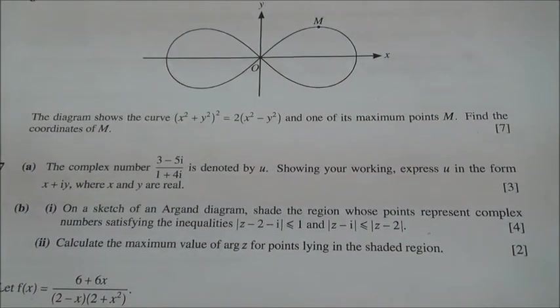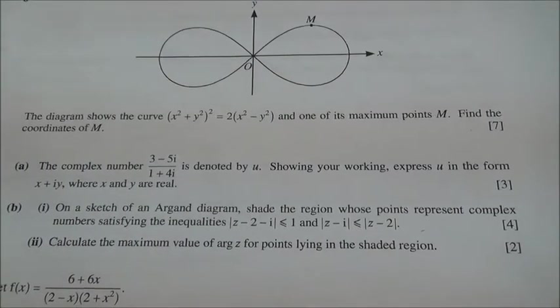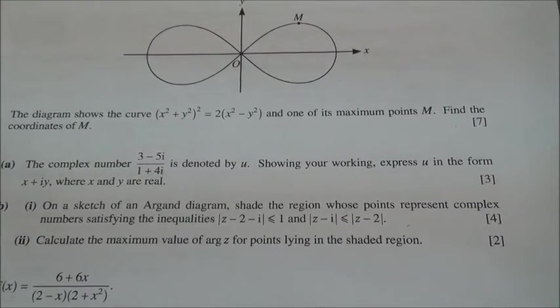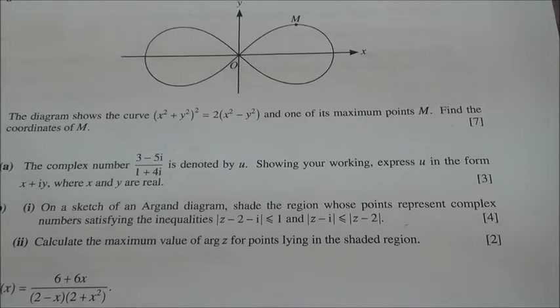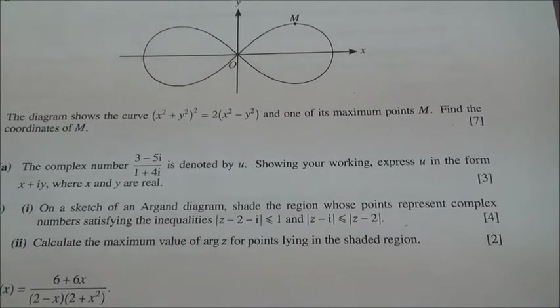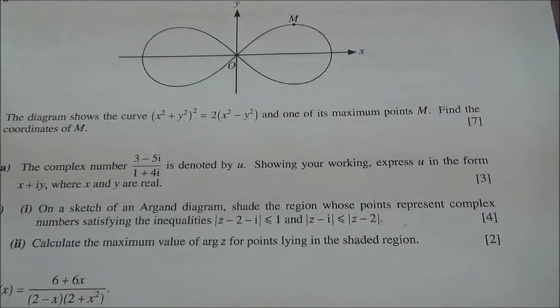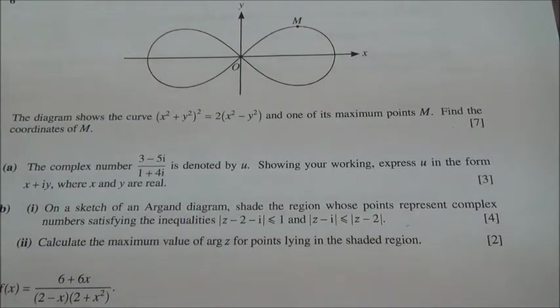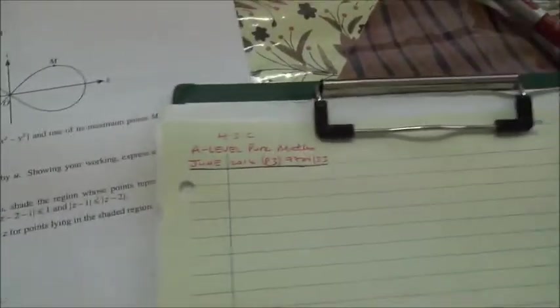For the second part, on a sketch of an Argand diagram, shade the region whose points represent complex numbers satisfying the inequalities mod z minus 2 minus i less or equal to 1 and mod z minus i less or equal to mod z minus 2.